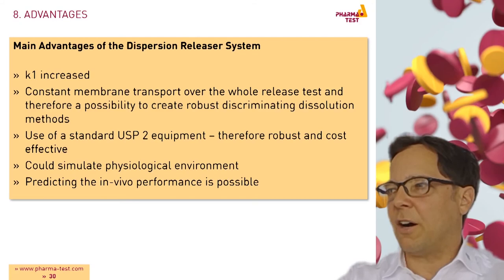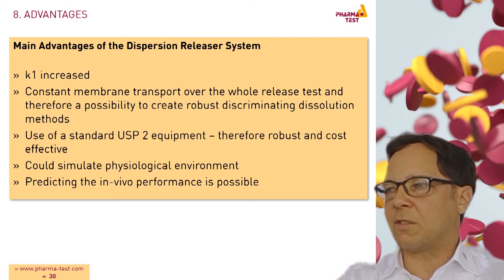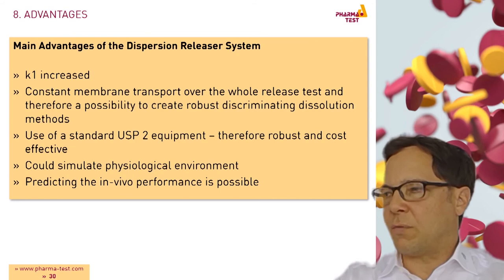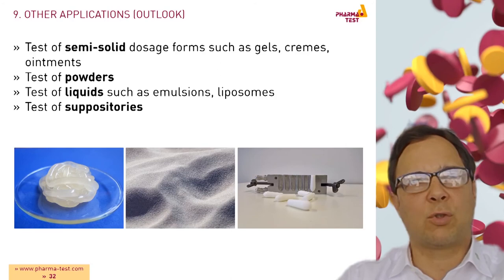I have shown the main principle of the dispersion releaser. The main advantages compared to conventional systems are: due to the internal stirrer we have an increased transfer through the membrane — K1 is increased. We have a constant membrane transport over the whole release test and therefore a possibility to create robust discriminating dissolution methods. Standard USP2 equipment is used. It is a robust and cost-effective system which can also be used for other types of dissolution tests with paddle and baskets. It could be shown in different publications that a physiological environment could be simulated and a prediction of in vivo performance could be given. We and other labs could already prove the robustness of the system when developing release tests for nano-formulations.